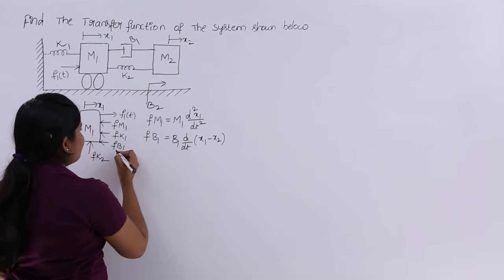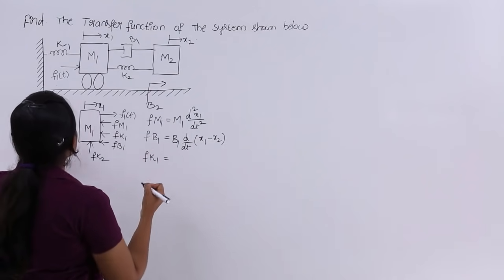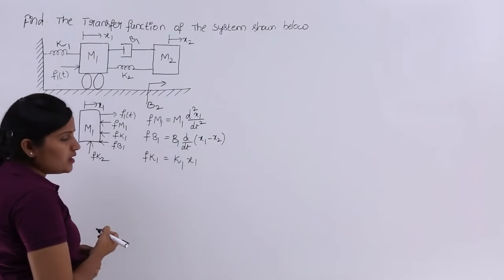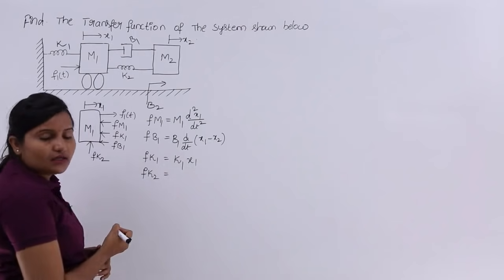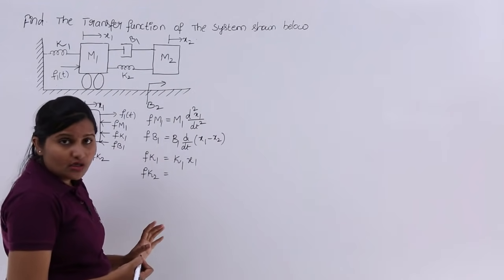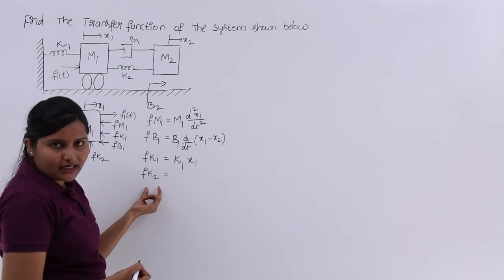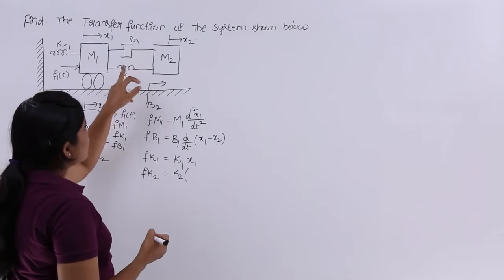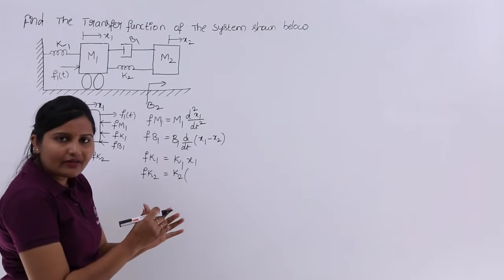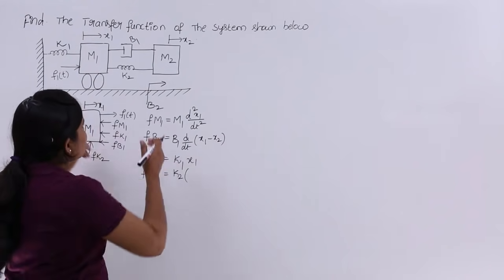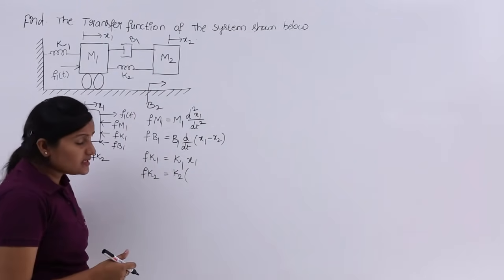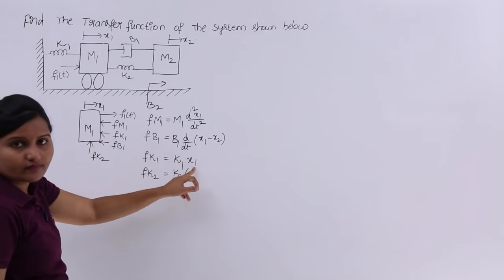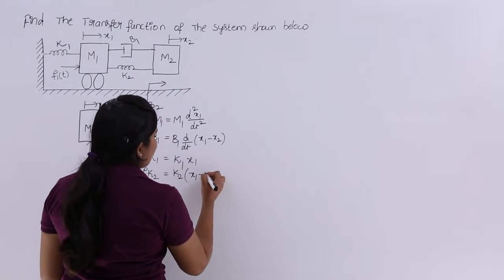Force due to spring k1 is simply fk1 = k1 × x1, since k1 is fixed to a reference on one side. For spring k2, however, both sides have displacement — x1 on one side and x2 on the other — so we must consider the difference. Therefore, fk2 = k2 × (x1 − x2).